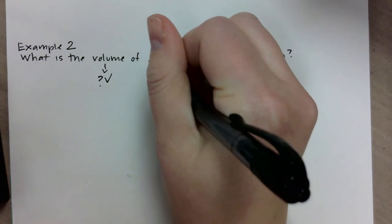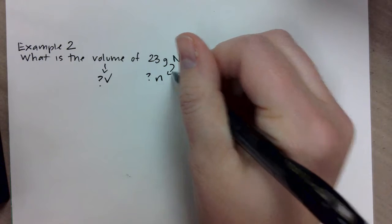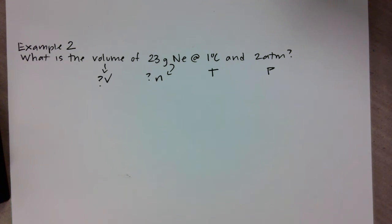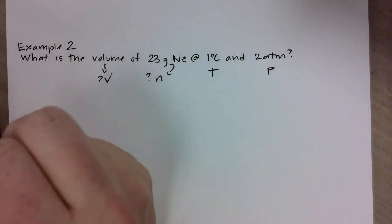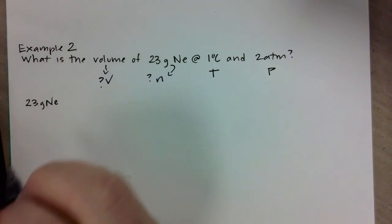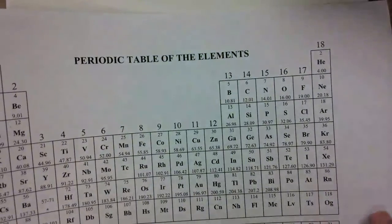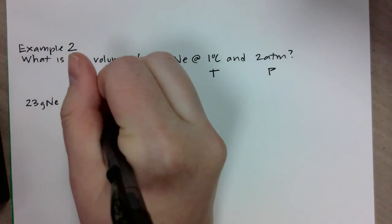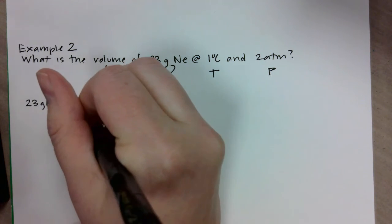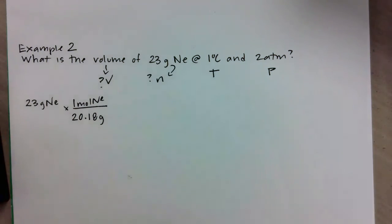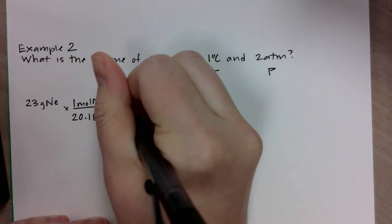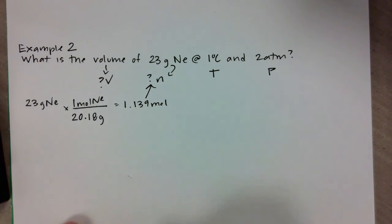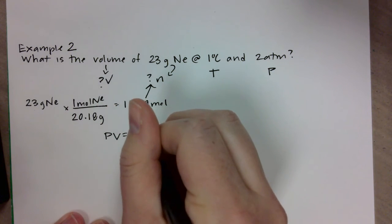Technically I don't have an n either, but I can take my 23 grams and turn that into a number of moles. I can't just pop the 23 grams in here - that is illegal - but I can convert those grams to moles and then put them in here. So that is what I have to do first: 23 grams of neon. If I look on the periodic table, it's 20.18 grams for every one mole of neon. If you do that division, I have just a little over one mole at 1.139 moles, and now I do have an n for my ideal gas law.